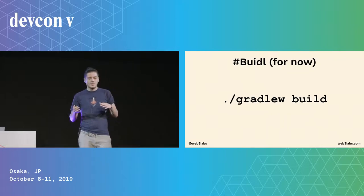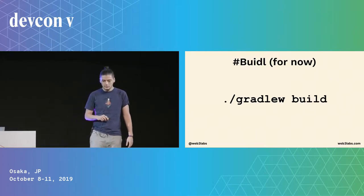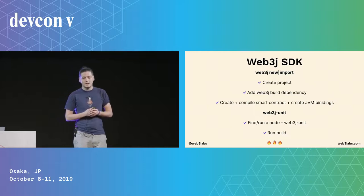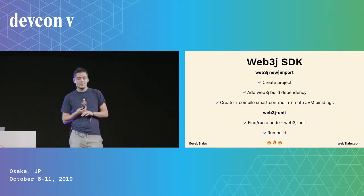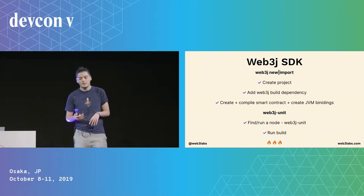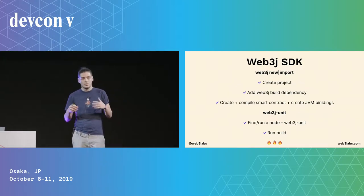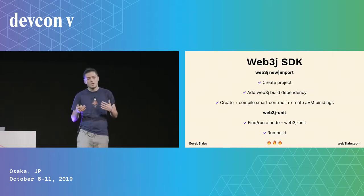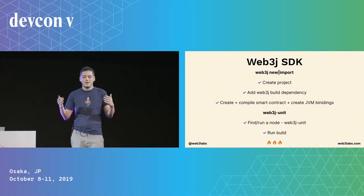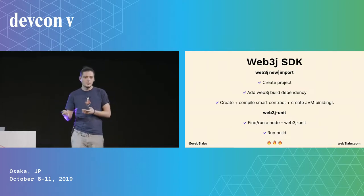The third step is you need to build it, but we're looking to automate this to make it even simpler in the future. With the Web3J SDK, we've automated creating a new project, adding the Web3J build dependency, creating and compiling the smart contract, and creating the JVM bindings. We've also built a Web3J unit module that runs the EVM in-process in your tests, so you can test contracts as if testing any other piece of Java code — without needing to spin up a node or use Ganache.